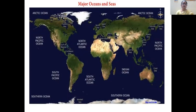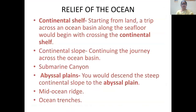Now we are going to learn about the relief of the ocean in detail. There are six important relief features of the ocean: continental shelf, continental slope, abyssal plains, and trenches are the four main ones. I've also included submarine canyons and the mid-ocean ridge as important parts. We will learn about each - where it is located, how deep, and its significance.